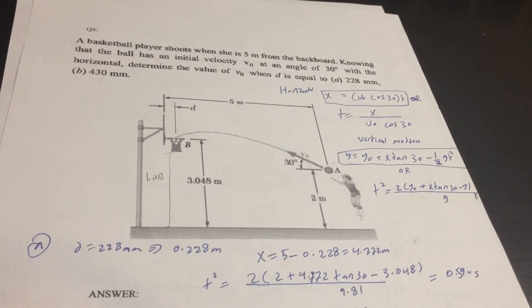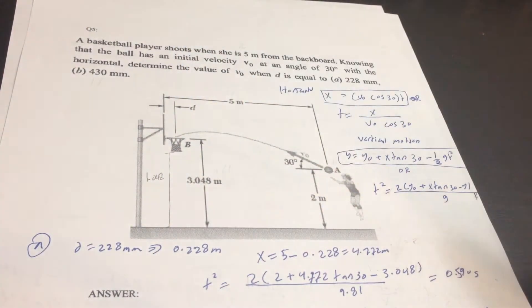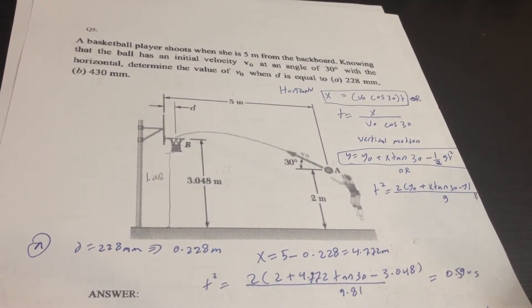As you can see, I have converted the numbers from millimeters to meters, and then I subtract: X equals 5 minus this number, which will give us 4.772 meters.